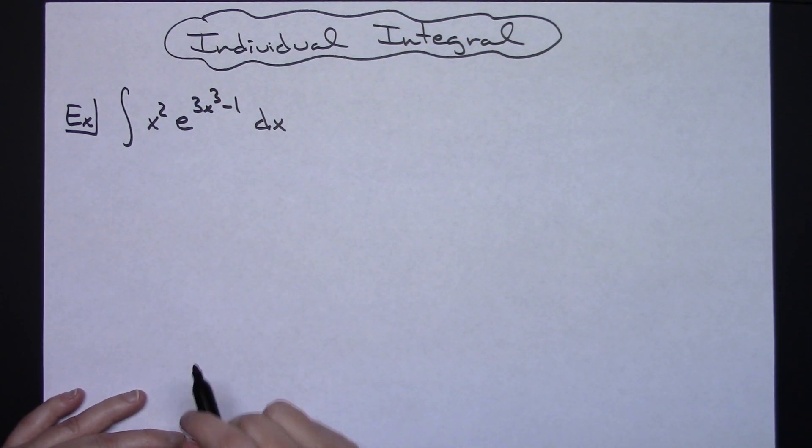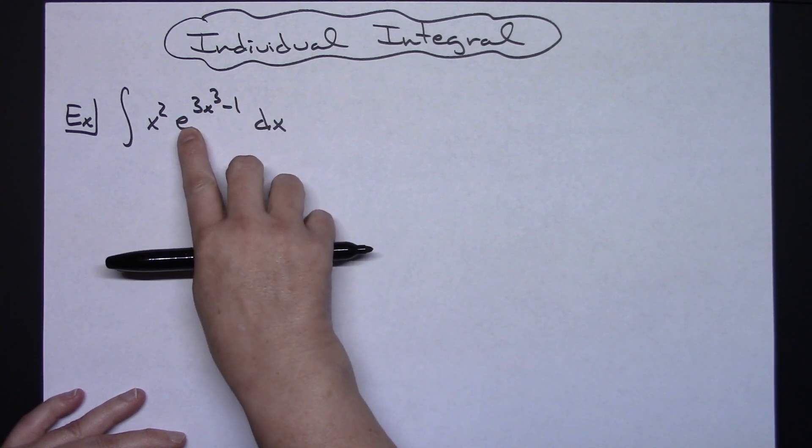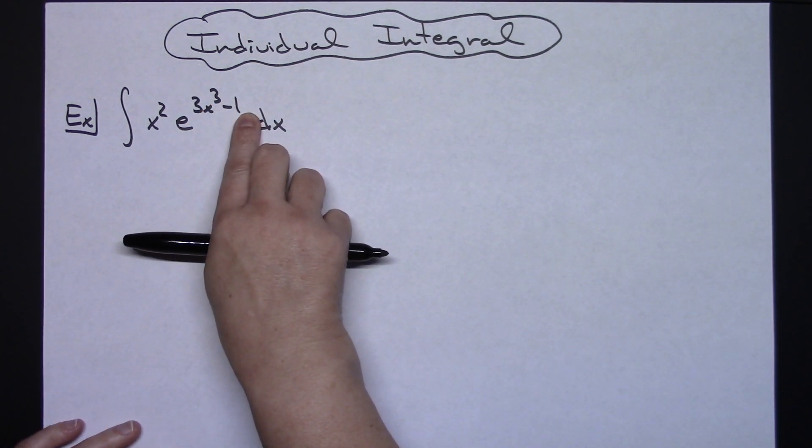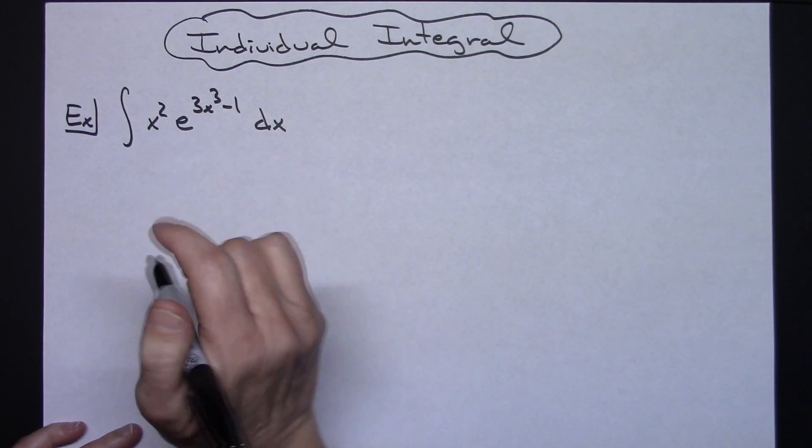It is going to be a straight u substitution. So what I'm going to do here is I'm going to take a look at this e raised to some power and I'm going to allow my u to be what's in that exponent right there.